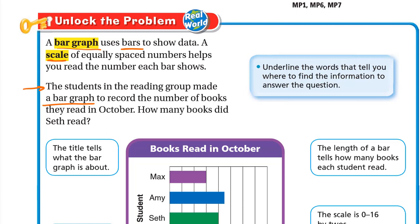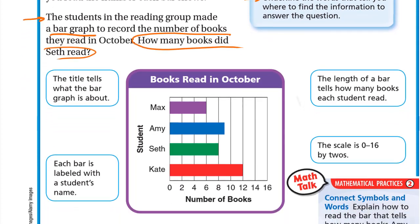The students in the reading group made a bar graph to record the number of books they read in October. How many books did Seth read? Underline the words that tell you where to find the information to answer the question. We'll use the bar graph to answer this question.